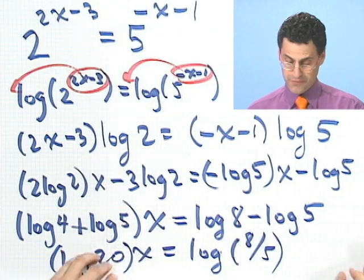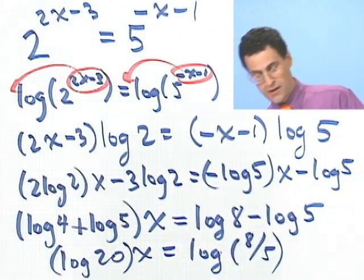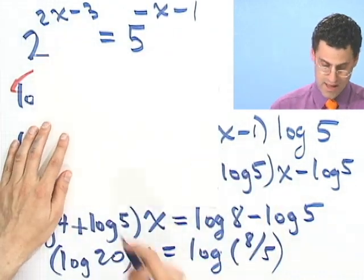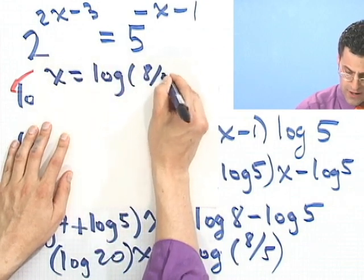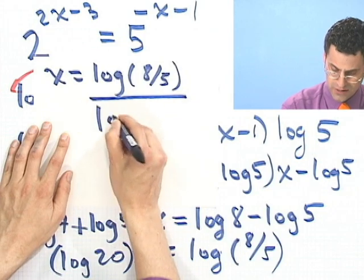Great, so now I can actually solve for x exactly, I'll do that right here, and I see that x equals log of 8 over 5, all divided by log of 20.